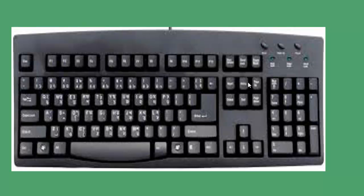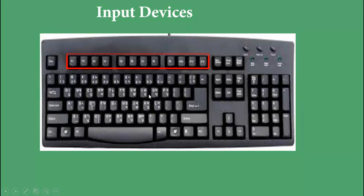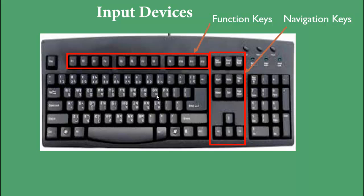The first row is called function keys — F1, F2, up to F12. Next are navigation keys, which are used to change the direction of the cursor or focus of the computer. Then there is the numeric keypad, which contains numbers, plus, minus, divide, and multiply operations.